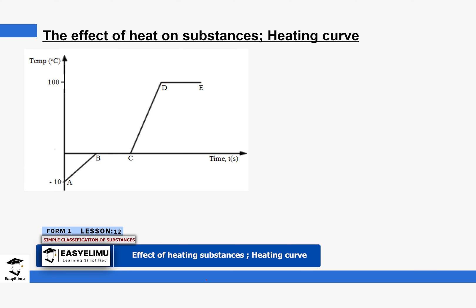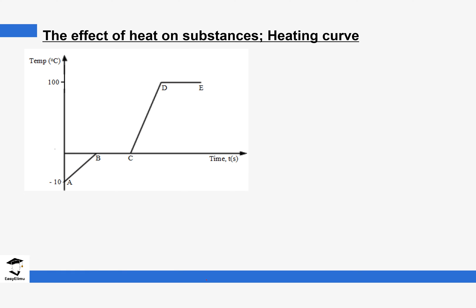We are going to look at the effect of heating substances, and today we are going to discuss heating ice, which is water in its solid state. This ice was heated and the values were tabulated and plotted on a graph. We are going to discuss each region of the graph, what it represents, what happened to the particles in that region, and we will be using the kinetic theory to explain these changes.